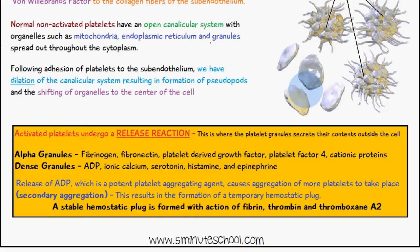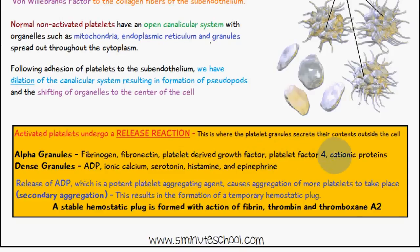Platelets have two types of granules: alpha granules and dense granules. Alpha granules contain fibrinogen, fibronectin, platelet-derived growth factor, platelet factor 4, and cationic proteins.